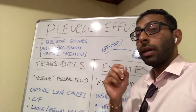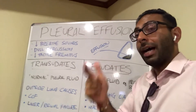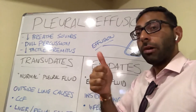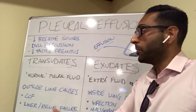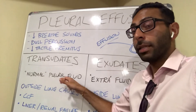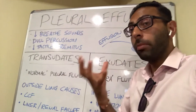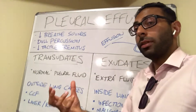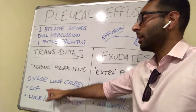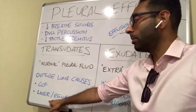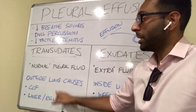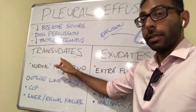You have two main types of effusion: transudate effusions and exudate effusions. Transudate effusions tend to have lower protein levels and lower LDH levels. Generally, it's your normal pleural fluid — the normal fluid that actually sits in there in the first place, but there's just too much of it. When you think about causes, it's usually things outside of the lung that lead to transudate effusions: things like cardiac failure, liver problems like cirrhosis, and renal problems like nephrotic syndrome, for example.